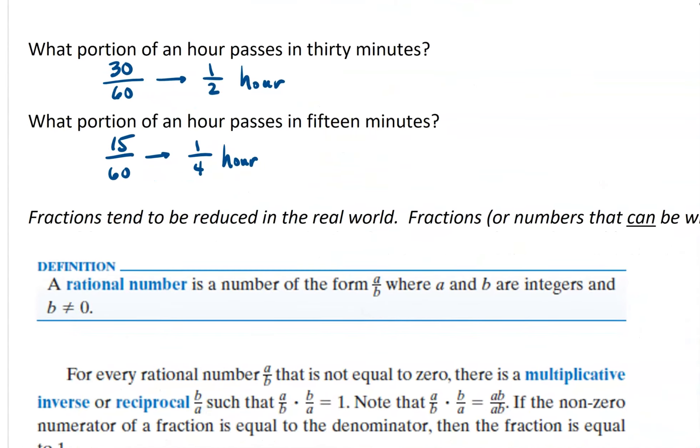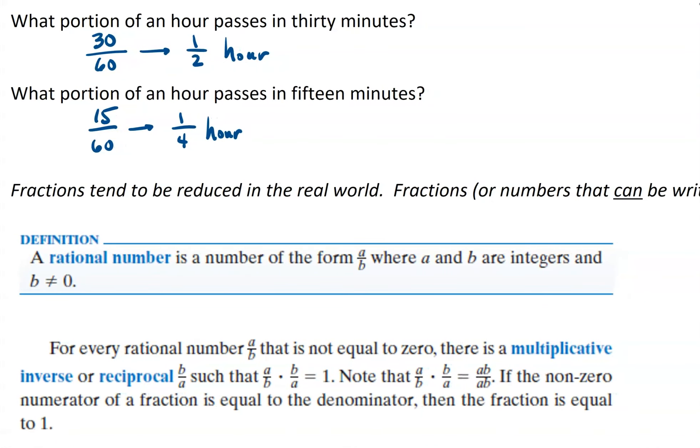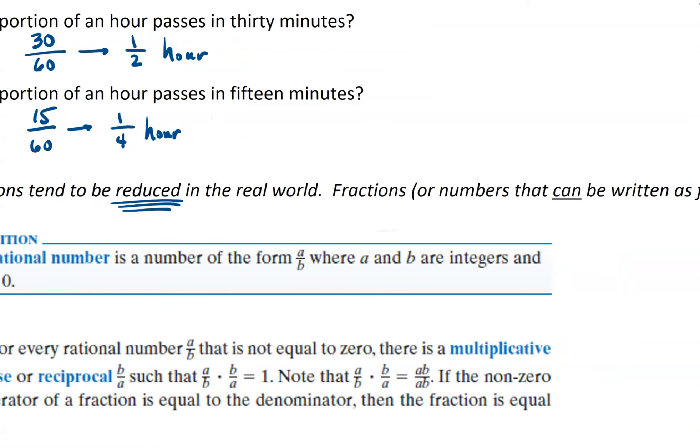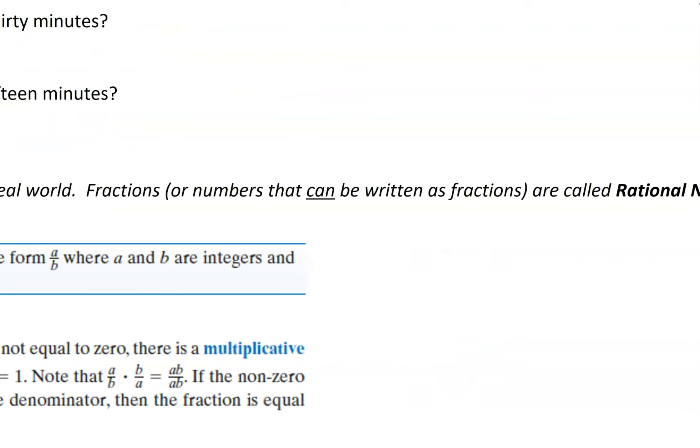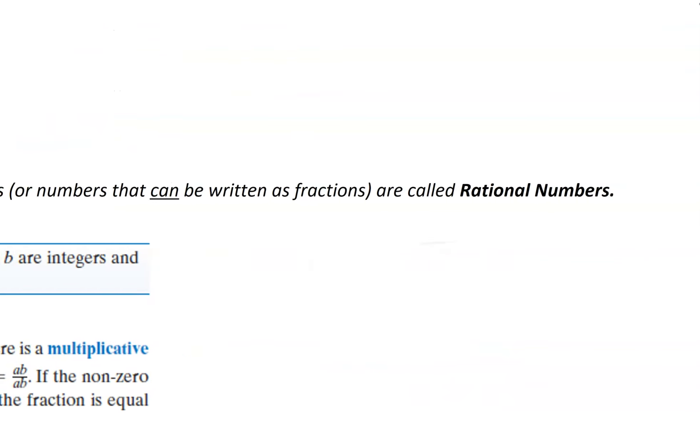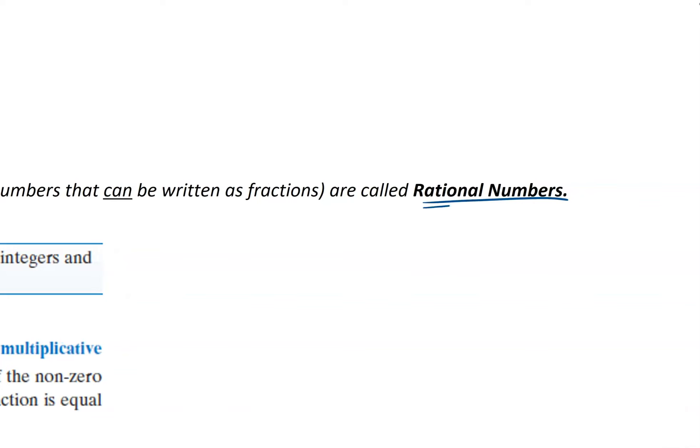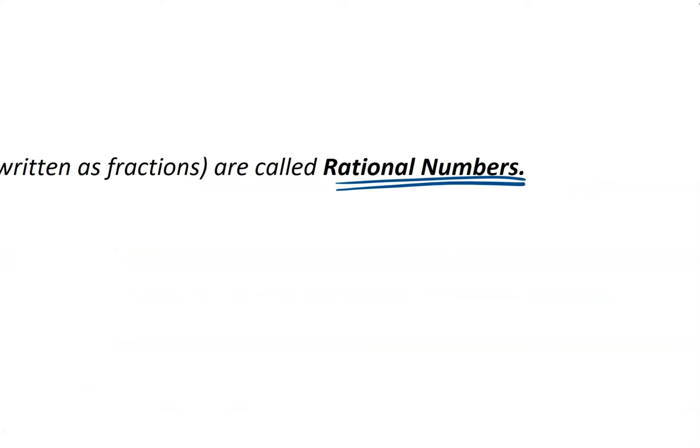So as it turns out, when we talk about fractions, especially fractions in the real world, they tend to be reduced to lowest terms. And fractions or numbers that can be written as fractions, even if they're not always written as fractions, are what we call rational numbers. So we're dealing with rational numbers in this unit, and rational numbers are simply numbers that are written, or can be written, as fractions.